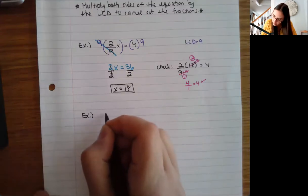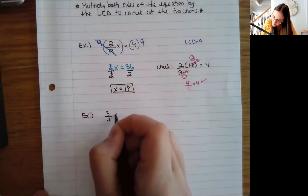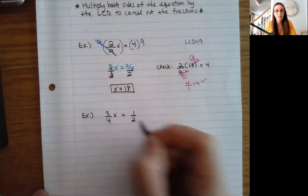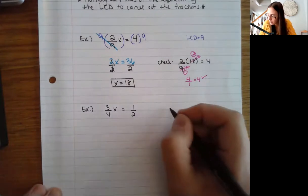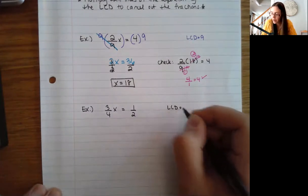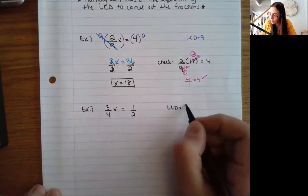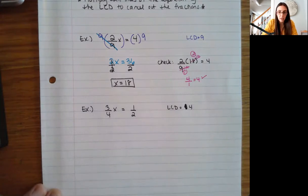Maybe I have (3/4)x = 1/2. Here I have a four and a two, so my LCD is going to be four — not eight. You could use eight though; any common denominator will work, it just makes your numbers a little bit bigger. So we try to stick with the least common denominator. So I multiply both sides by four.